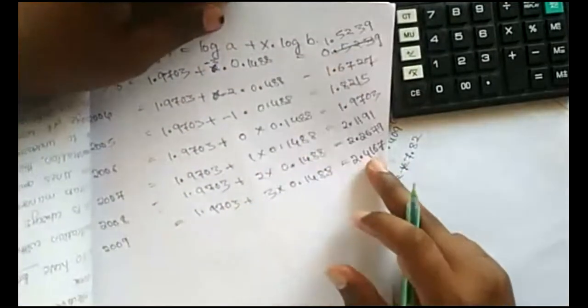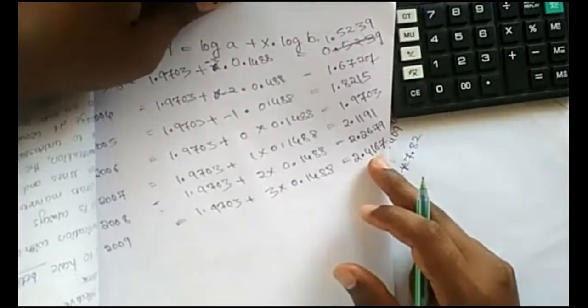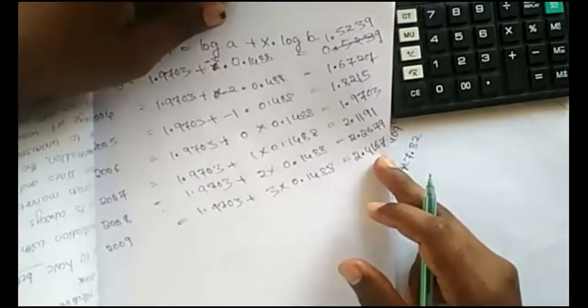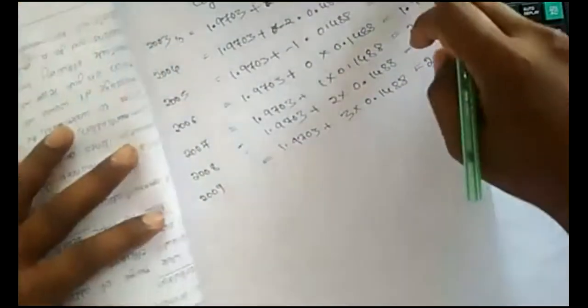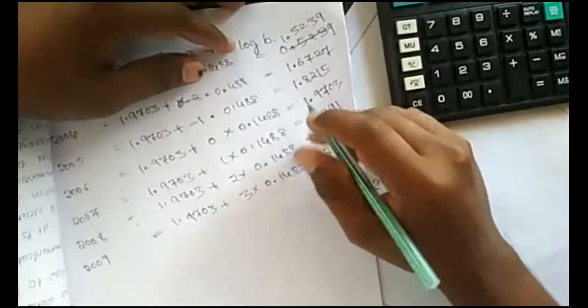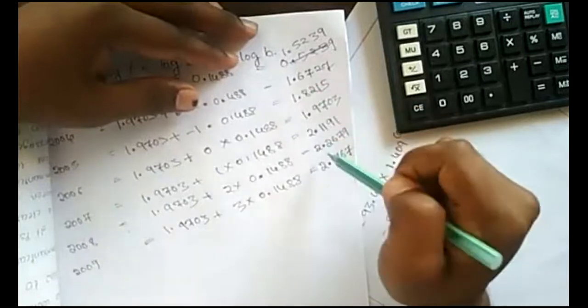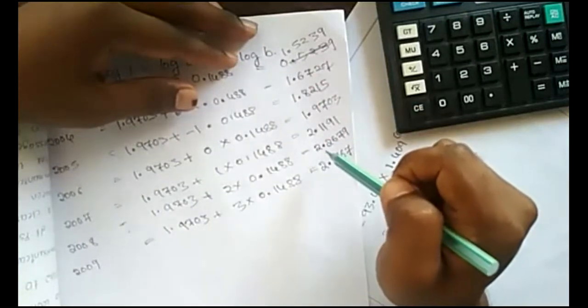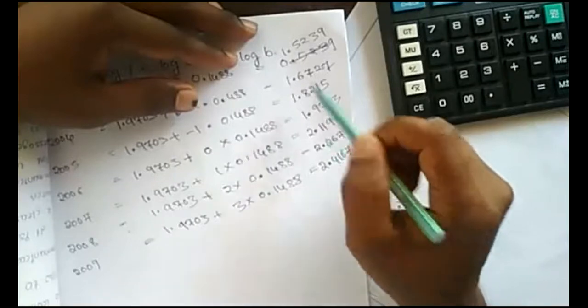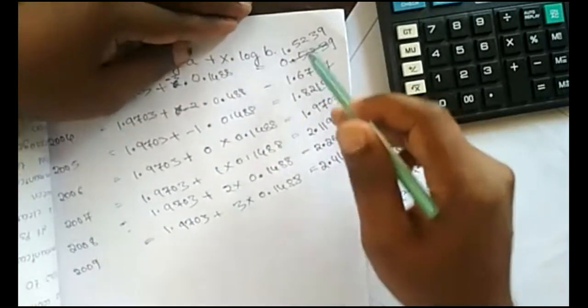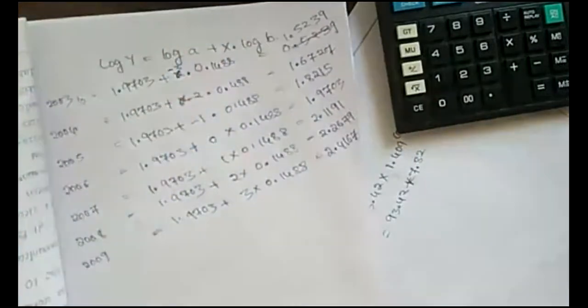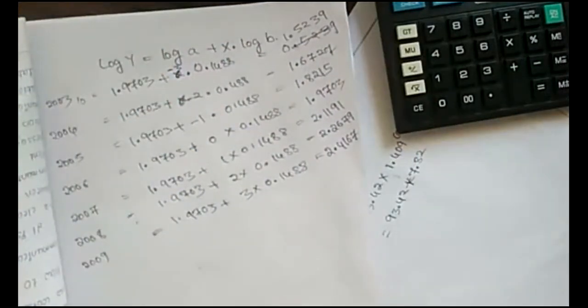These are not trend values, these are log of trend values. They asked you for trend values. So now what you have to do to find out actual values, actual trend values, you have to take antilog of all these values. Find actual values, take antilog of it. So you can take antilog of it, just a little bit work is there, check out antilog table.